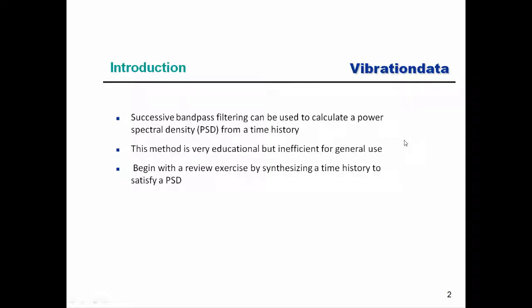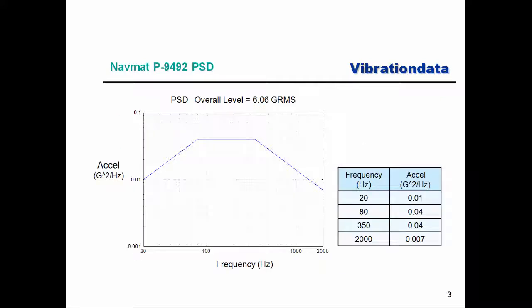We're going to start off with a couple of review steps. We're going to synthesize a time history to satisfy a PSD. Here's our NAVMAT P9492 PSD, which we've used several times in our webinar series. This is a log-log format with acceleration in G-squared per hertz — really GRMS-squared per hertz — along the y-axis, and frequency in hertz along the x-axis. We've got four coordinate points, and the square root of the area under the curve is the overall GRMS value, which in this case is 6.06 GRMS.